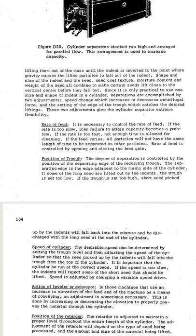Another adjustment in the cylinder separator is the rate of feed. It is necessary to control the rate of feed. If the rate is too slow, failure to add capacity becomes a problem. If the rate is too fast, not enough time is allowed for cleaning. If the feed varies, all particles will not have the same length of time to be separated. The rate of feed is controlled by opening and closing the feed gate.